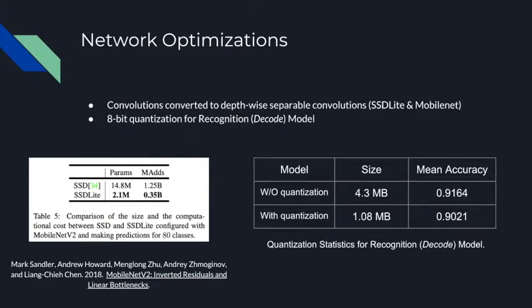Some of the network optimizations we explored include depthwise separable convolutions deployed in the SSD Light implementation, which reduces the number of parameters by a factor of close to seven. We also explored 8-bit quantization. As shown in the table, with quantization we are able to reduce the size of the decode-stage model by a factor of four with only a negligible decrease in mean accuracy.